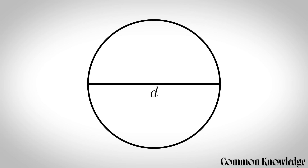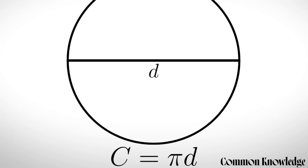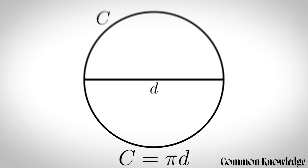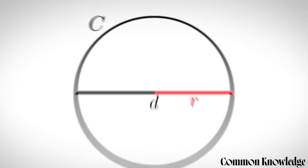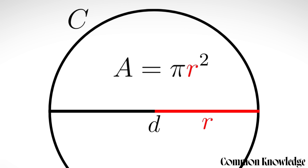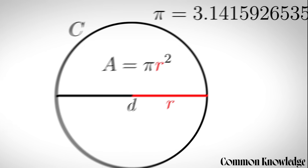Pi: if you've got a circle and you know the diameter then you can find the circumference using c equals pi d. If you want to find the area then you halve the diameter to get the radius and then use a equals pi r squared. Pi is just a really, really, really long decimal number.